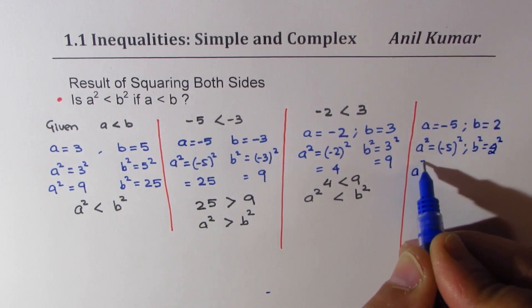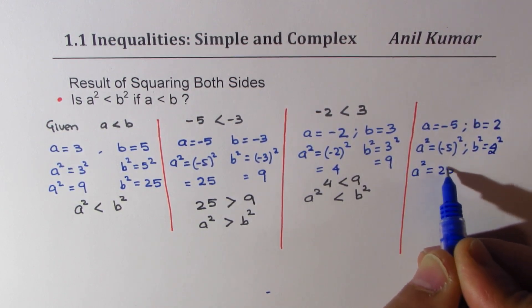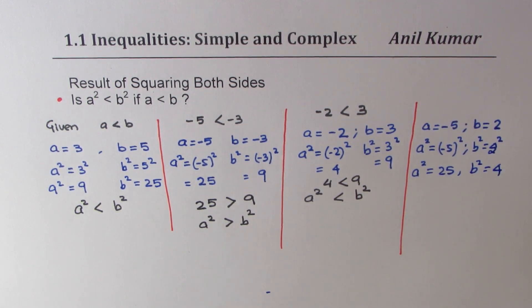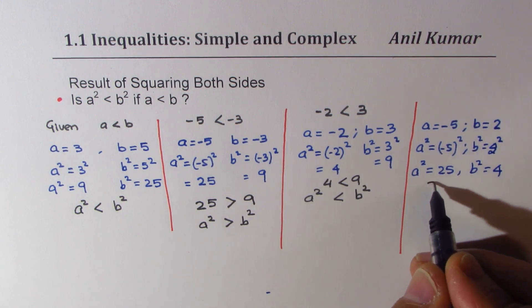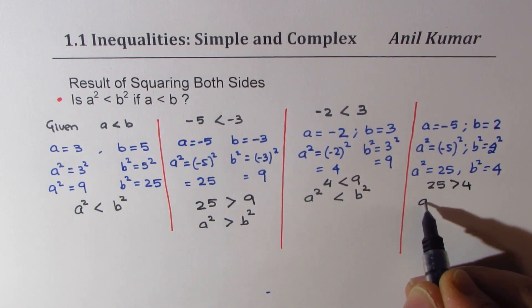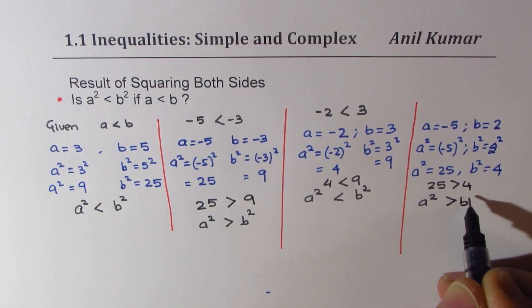So, a² = 25, and b² = 4. Now, clearly, you can see that 25 > 4, and therefore, in this case, a² > b².